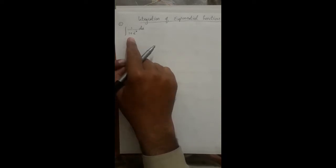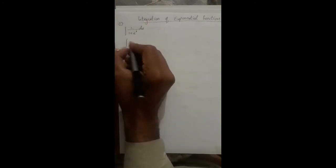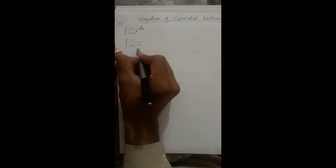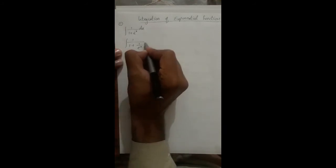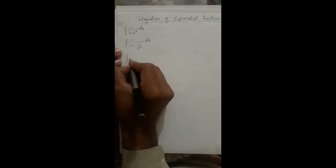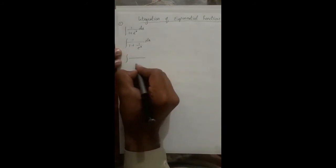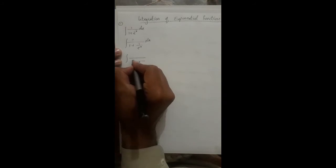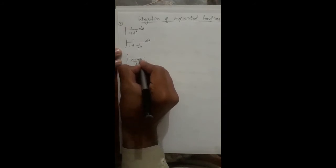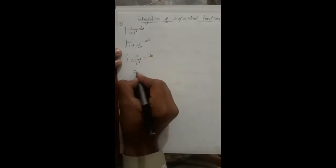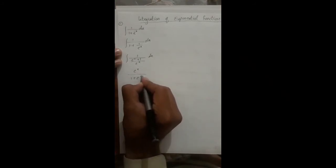For 1 over (1 plus e to the power minus x), we first eliminate the minus symbol. This becomes: integrate (1 plus 1 over e^x) dx, which simplifies to e^x over (1 plus e^x) dx.